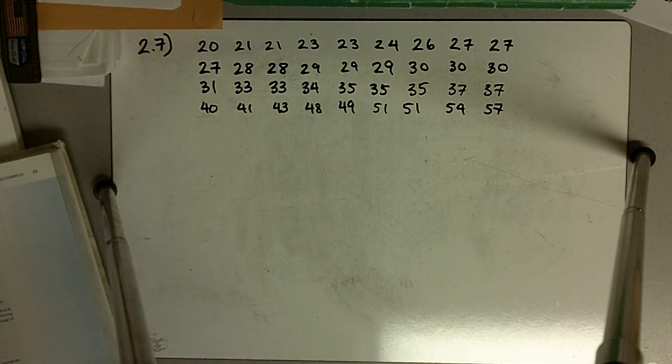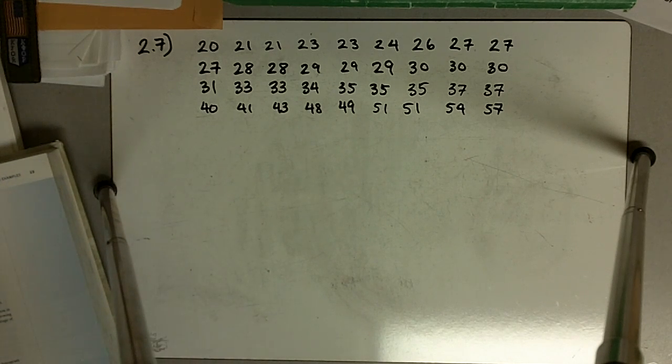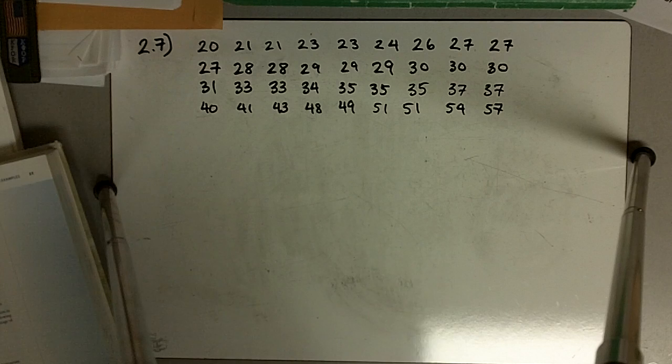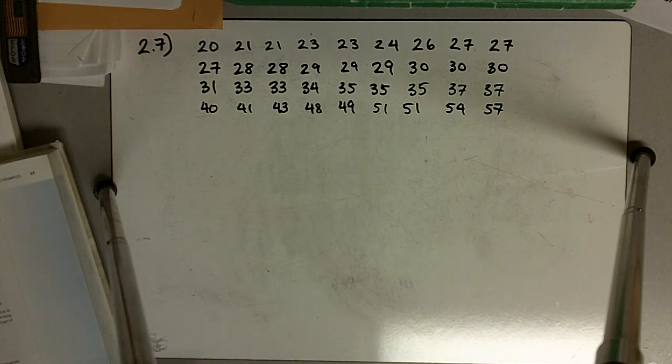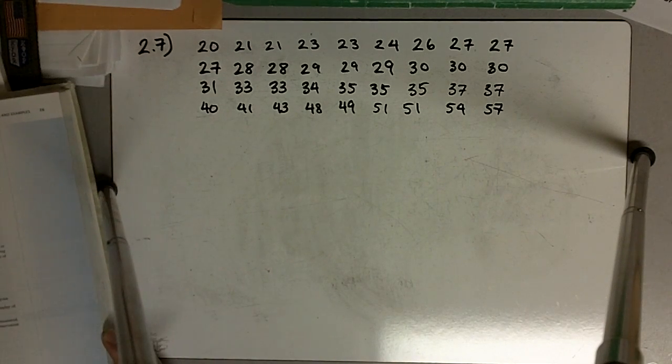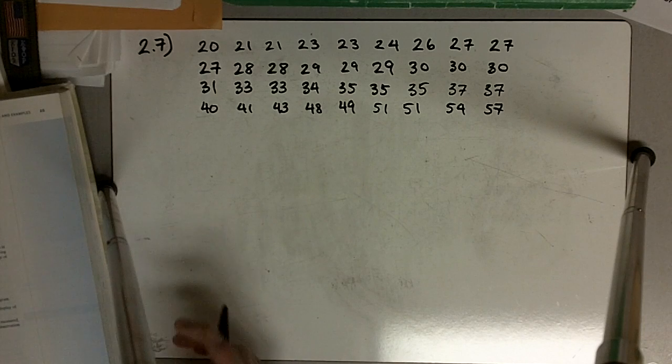As part of a study of brain development, 36 nerve cells were taken from the brains of newborn guinea pigs. The investigators counted the number of dendritic branch segments emanating from each nerve cell. The numbers were as follows.